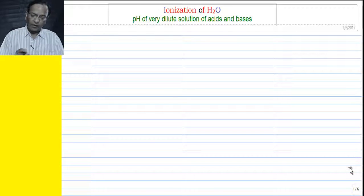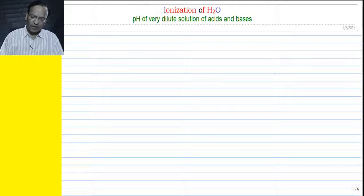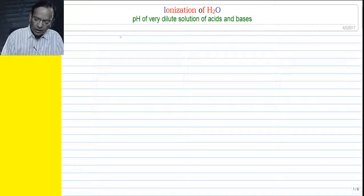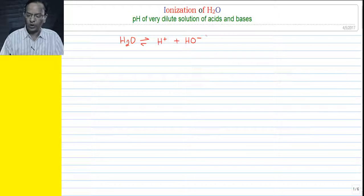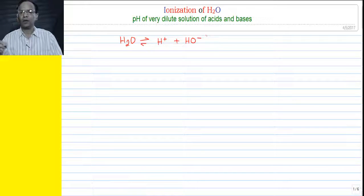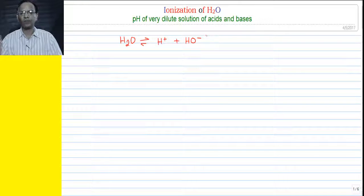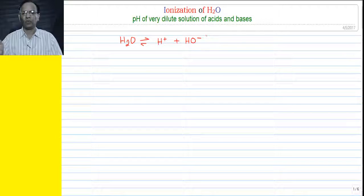Water is itself a very weak electrolyte which ionizes by the expression H₂O → H⁺ + OH⁻. That is the simple representation of ionization of water; otherwise it is written as H₂O + H₂O → OH⁻ + H₃O⁺ (hydronium ion). That is the simplest way of representing ionization of water.